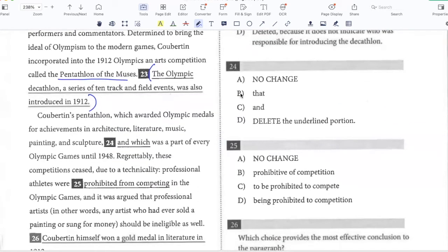Coubertin's Pentathlon, which awarded Olympic medals for achievements in architecture, literature, music, painting and sculpture, and which was a part of every Olympic Games until 1948. So here my main sentence is Coubertin's Pentathlon was a part of every Olympic Games until 1948. And this part is additional information, which awarded Olympic medals for achievement in architecture, literature, and so on. So this 'and which' is not correct, because if I say 'and which was a part of every Olympic Games,' then I need something else to be said after 1948. I can't say 'that was a part' because that also will leave it hanging. And if I say 'and was a part of every Olympic Games,' then it assumes that this which part is an independent sentence. So you'll just delete the underlying portion so that the sentence makes sense.